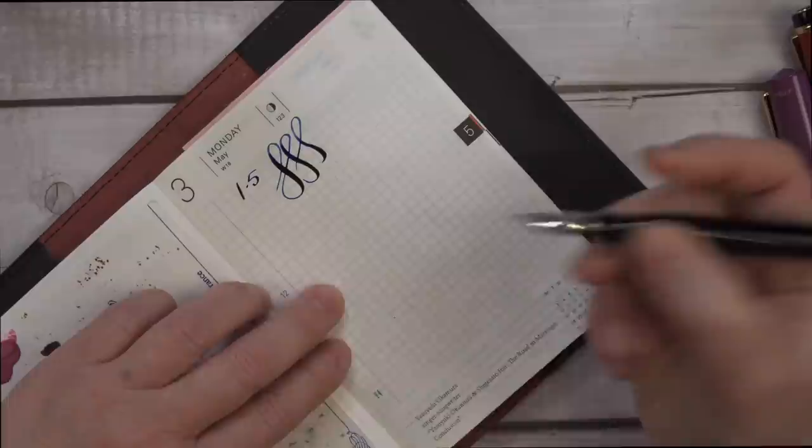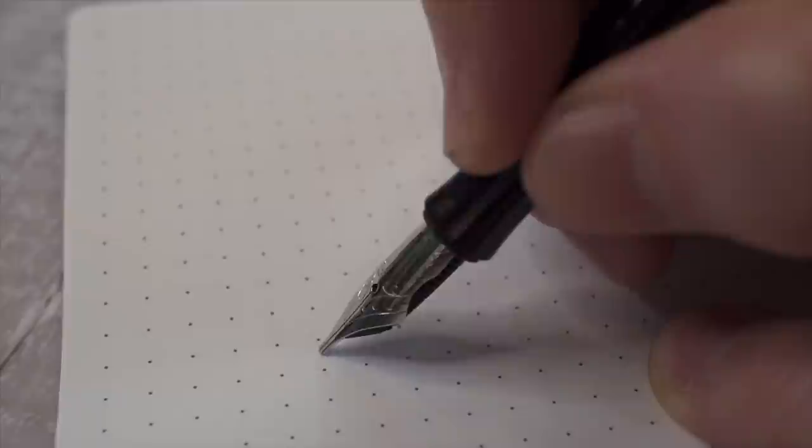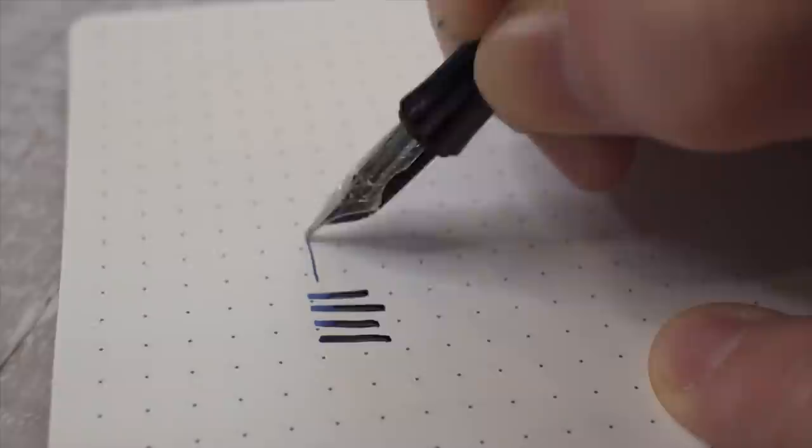Now let's talk about Flex. This is a steel 1.5 stub nib that's flexible from Regalia Riding Labs. The nice thing is that it can act like a stub or an italic, with the thicker lines going straight up and down and the thinner lines going horizontally.